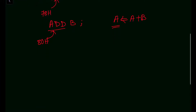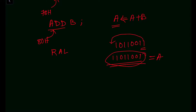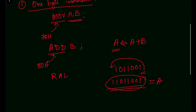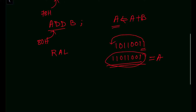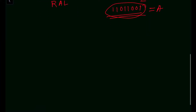Another example of a one-byte instruction is RAL, which means rotate the content of the accumulator to the left. These are a few examples of one-byte instructions. Now let us move on to two-byte instructions.